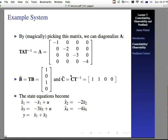The state equations, then, they end up becoming x1 bar dot is equal to minus x1 bar plus u, x2 dot bar, I should say, is equal to minus 2x bar 2, x3 bar dot is equal to minus 3 times x3 bar plus u, x4 bar dot is equal to minus 4x4 bar. And then you have y is equal to x1 bar plus x2 bar. And as a consequence, then, you can see that